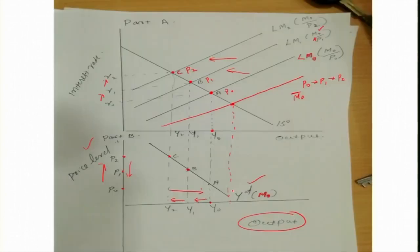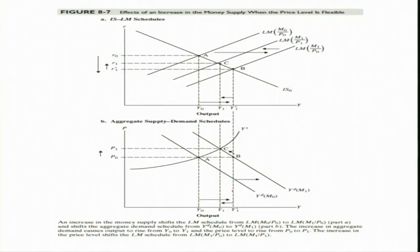As you can see, this is the aggregate demand curve we derived in the previous session — a downward sloping aggregate demand curve when price level changes. This is the demand curve where YD equals M naught. To begin with, assume that the initial equilibrium position is where LM money supply is M naught and the price level is P naught.